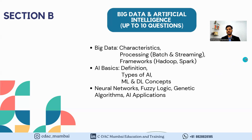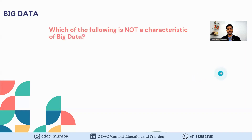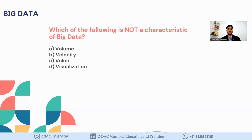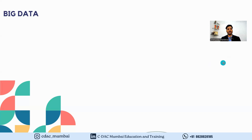Now we have a question on screen: which of the following is NOT a characteristic of big data? The options are: A) Volume, B) Velocity, C) Value, D) Visualization. The answer is D — Visualization. Now let's move to the next question about big data.